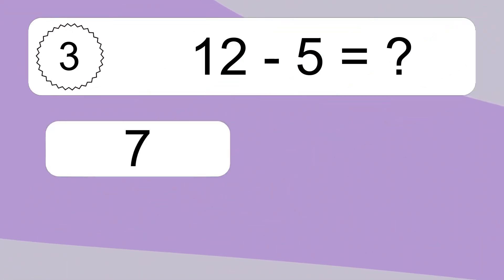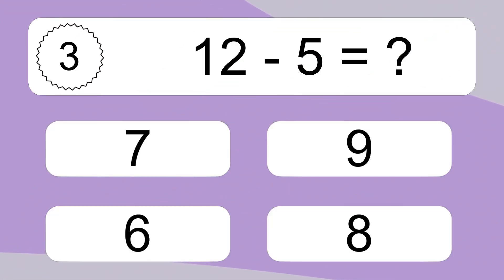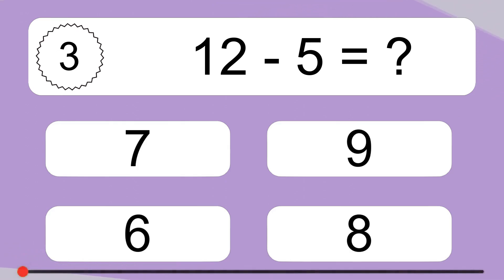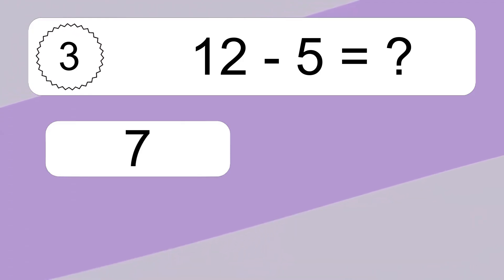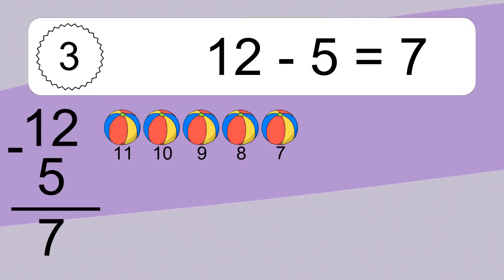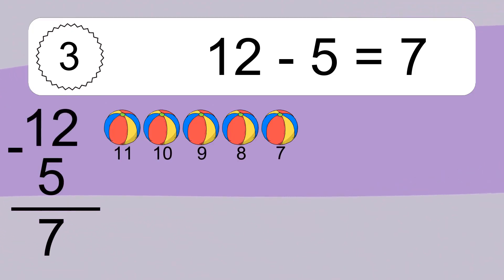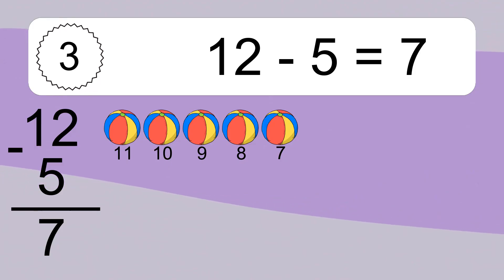12 minus 5 equals what? 12 minus 5 equals 7. Let's count it. 11, 10, 9, 8, 7.